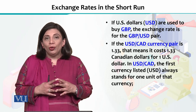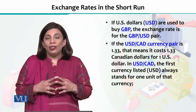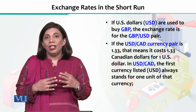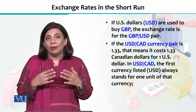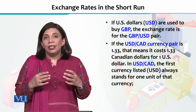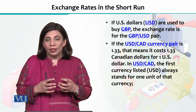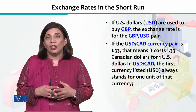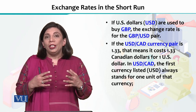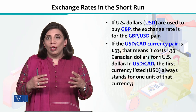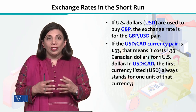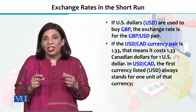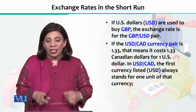The main thing that determines the rate of exchange in the short run is the supply and demand forces — how much supply there is of any currency and how much demand there is for that currency. These two things are used to influence your exchange rate, and we always express the exchange rate in the form of a pair.